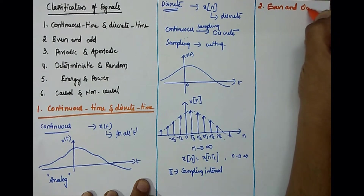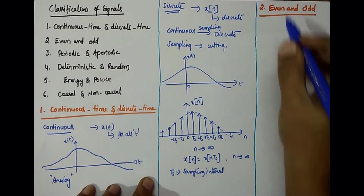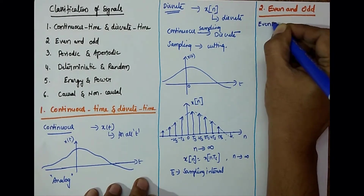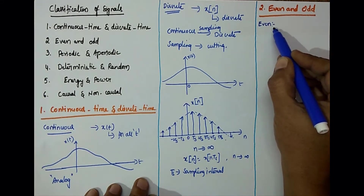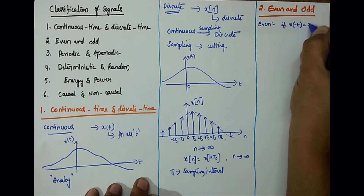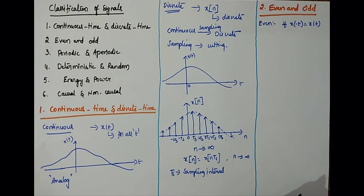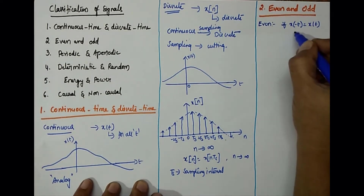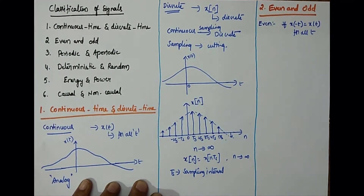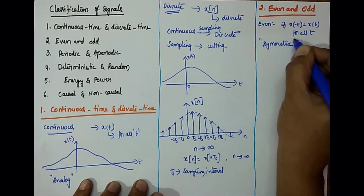Even and odd signals. A continuous signal is said to be even if x of minus t is equal to x of t. This means if you change the sign of t it gives the same signal for all t. Even signals are called symmetric signals because these are symmetric about the vertical axis.